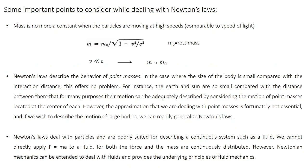Before going into the process of analyzing a classical mechanical system using Newton's laws, we need to keep in mind a couple of important points. First, mass is no longer a constant, especially when particles start to move with relativistic speed — meaning speed comparable to the speed of light, which is 3×10⁸ meters per second.